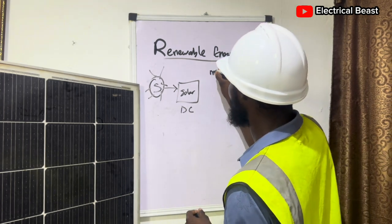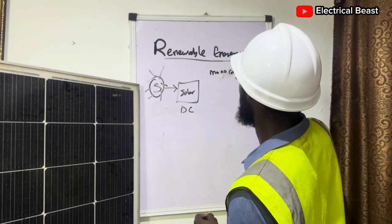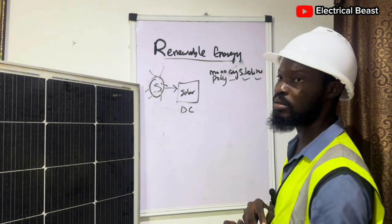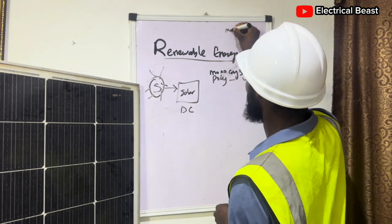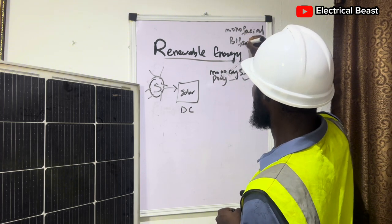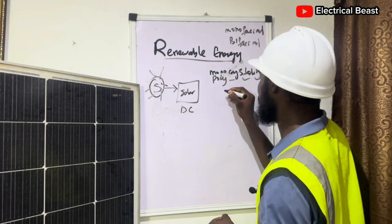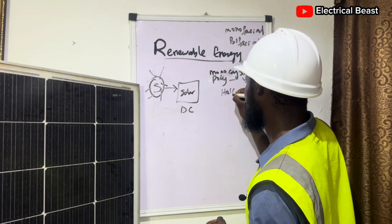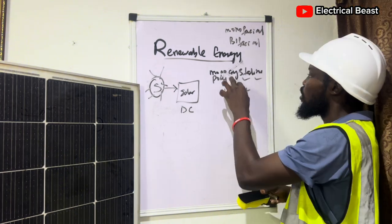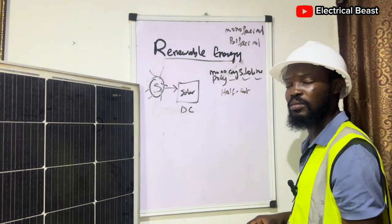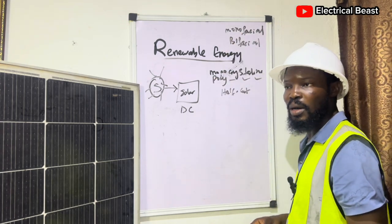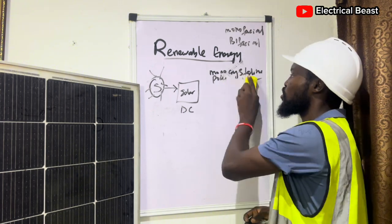We have monocrystalline solar panels, we also have monofacial, then we have bifacial, and we have half-cut solar panels. You can have a bifacial monocrystalline half-cut panel, or you can have a bifacial polycrystalline half-cut panel. I'm going to explain all of these in my next round of videos in this series.